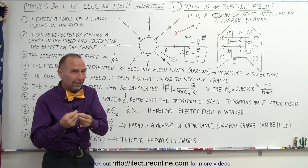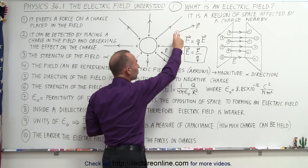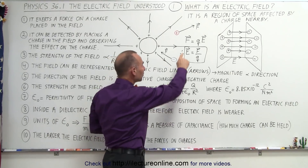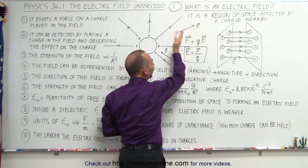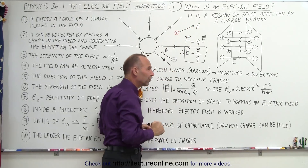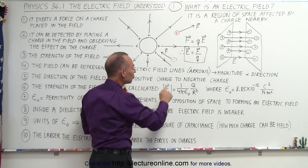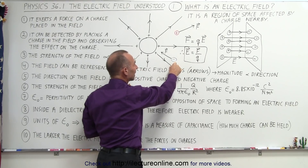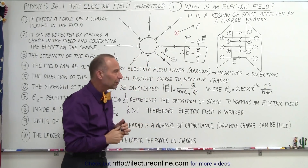One way in which you can tell an electric field exists is by placing another small charge inside the electric field. If you put a positive charge in the electric field, it will experience a force in the same direction as the electric field, from positive to negative. If you place a negative charge in the electric field, then that negative charge will feel a force in the opposite direction of the field, from negative to positive.